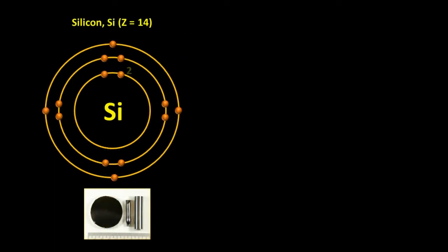Silicon atoms have two electrons in their first shell, eight in their second, and four in their third. To express this, we say that its electron configuration is two, eight, four.